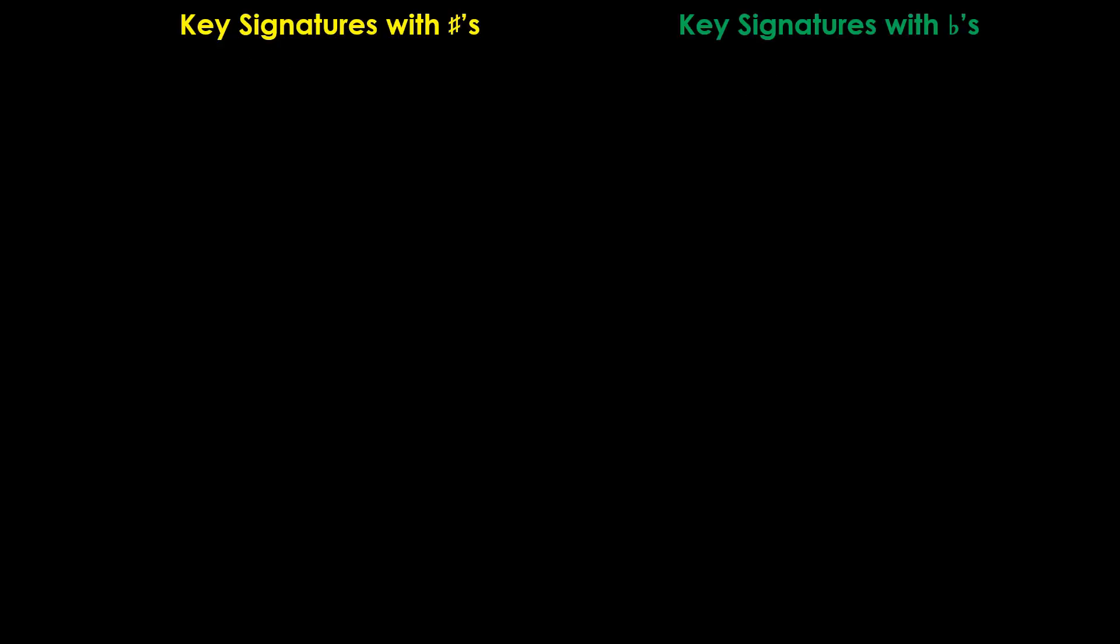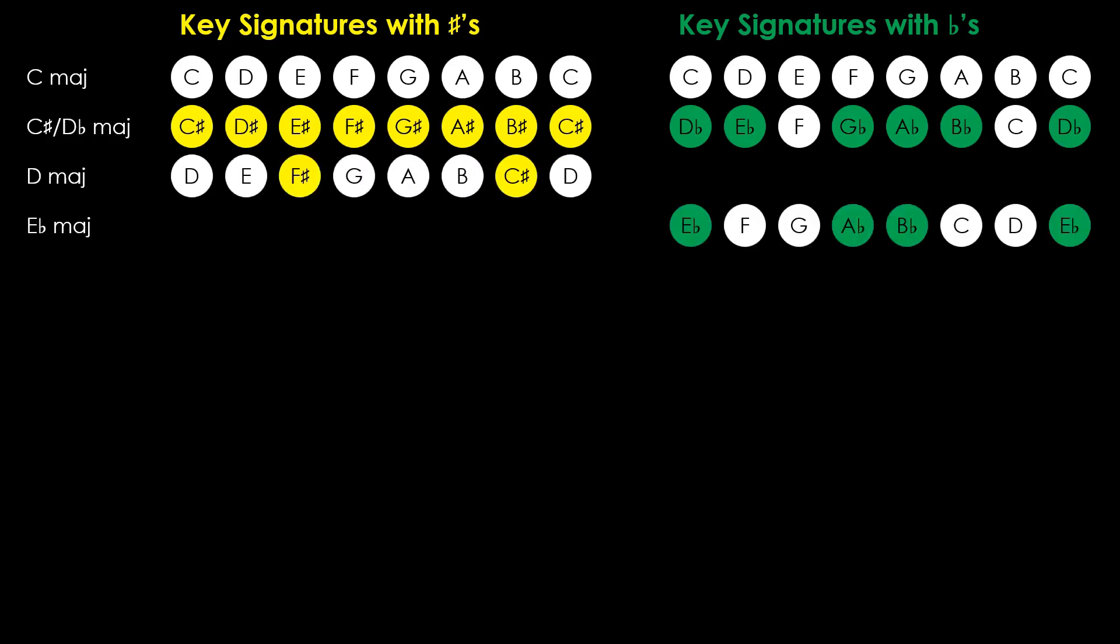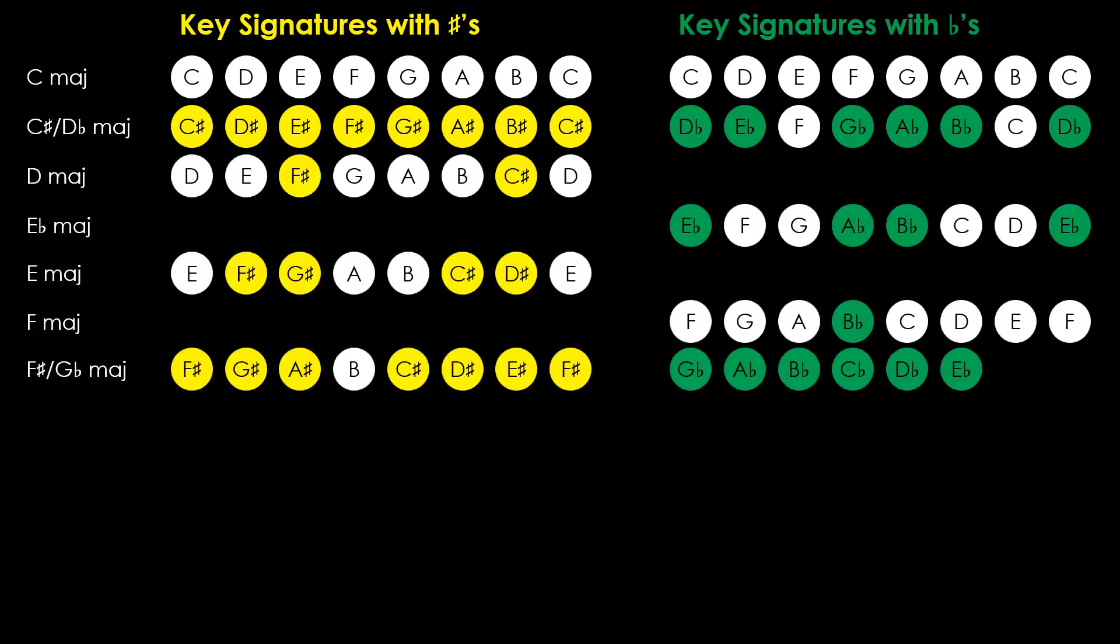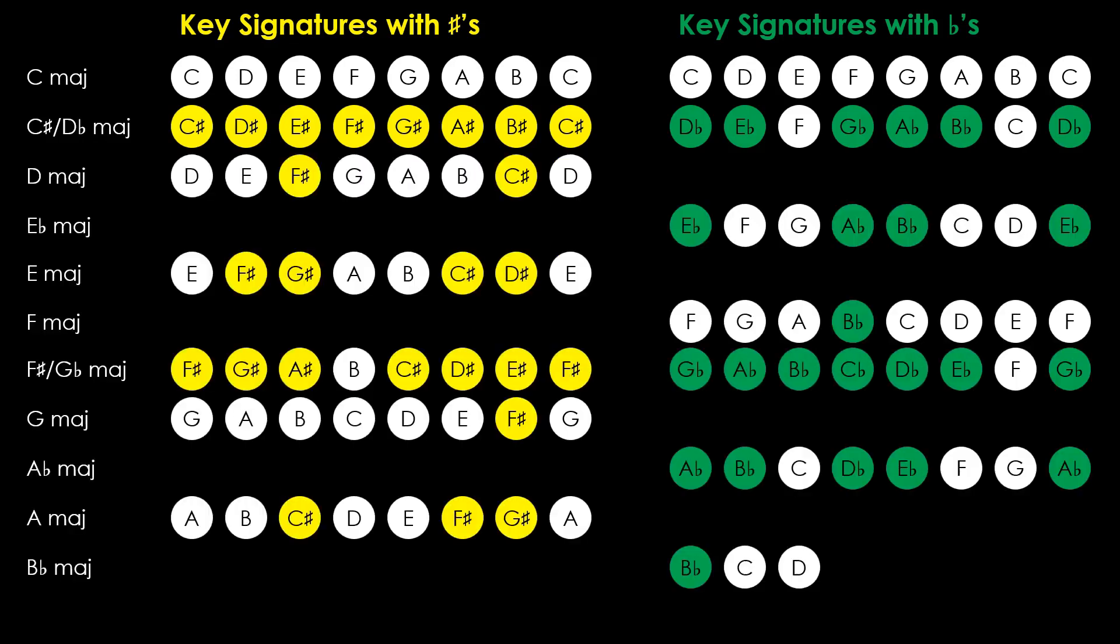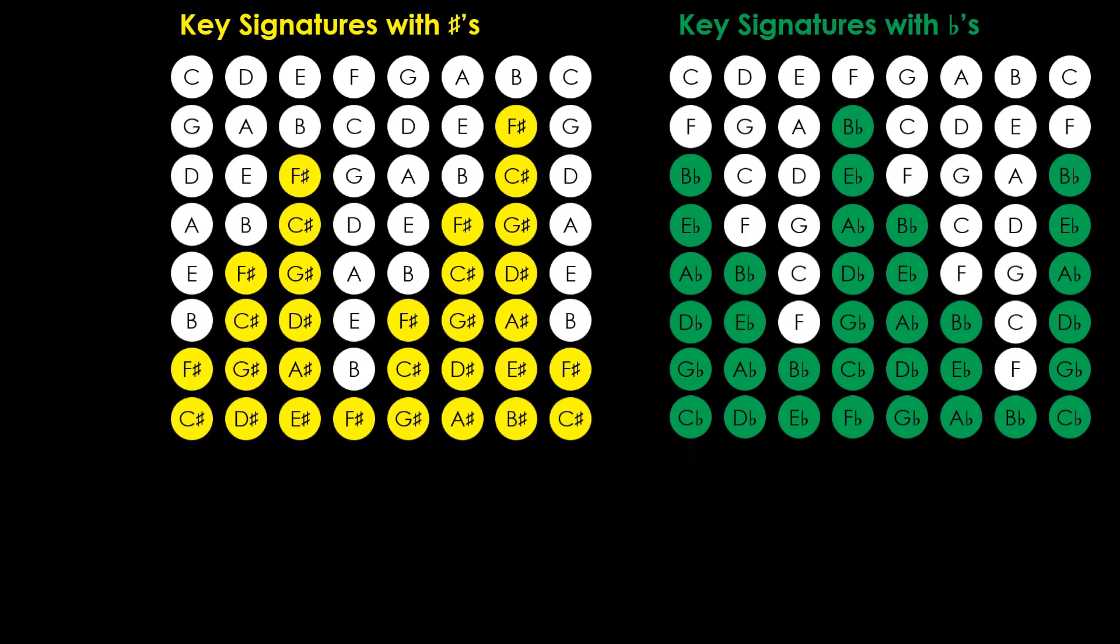If we construct a major scale on each of the twelve notes in an octave, we can uncover a pattern after we arrange the scales according to the number of sharps and flats their keys have. Every sharp added to the current key signature places the new key at a perfect fifth above the current key.